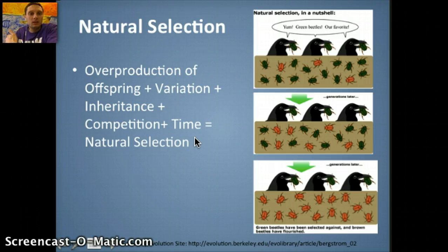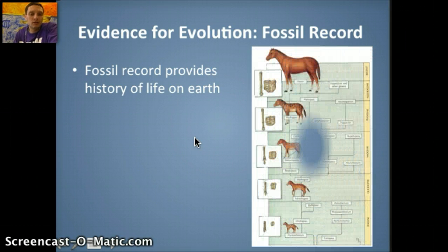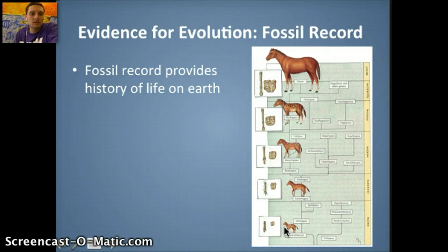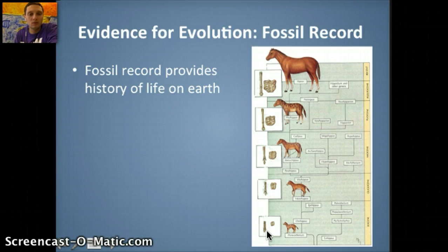Let's look at some data scientists have collected supporting the idea of natural selection and evolution. The fossil record is really where we can get a lot of that information. A great example is looking at horse species and their ancestors. Ancestors of modern-day horses were much smaller and had different hoof characteristics — a four-hoof shape that allowed them to move around and walk in what was at the time a very marshy, wet environment.